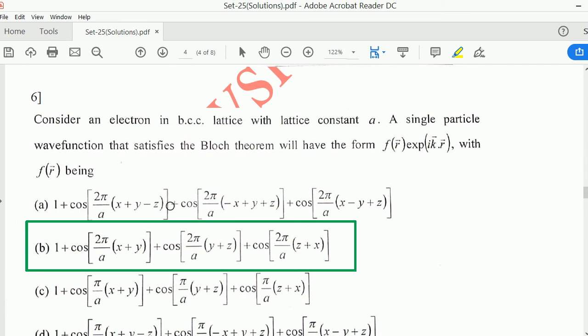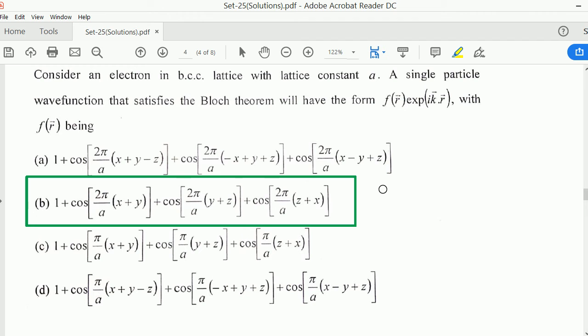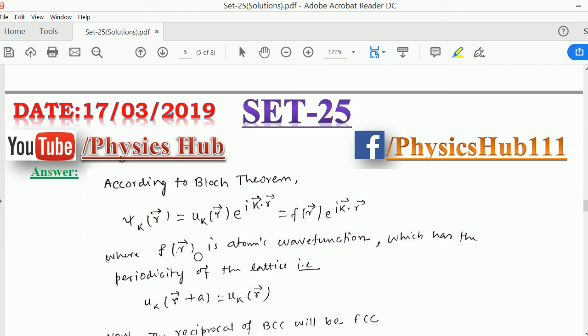Question number 6. Consider an electron in BCC body-centered cubic lattice with lattice constant A. A single particle wave function that satisfies the Bloch theorem will have the form F(R) exponential i K dot R. If you go to solve this question by the property of Bloch theorem, the characteristic is Psi K of R equals U K of R e to the power i K dot R, where U K of R is an atomic wave function which has the periodicity of the lattice.